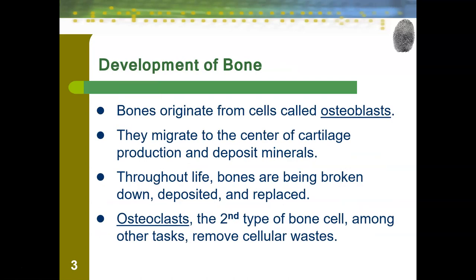Bone originates from cells called osteoblasts. They migrate to the center of cartilage production and deposit minerals that turn the cartilage from something rubbery into hard bone. Throughout your life, your bones have to be maintained by being broken down, deposited, and replaced — assuming you are healthy. People who aren't eating a balanced diet or have medical issues may have problems with their bones.